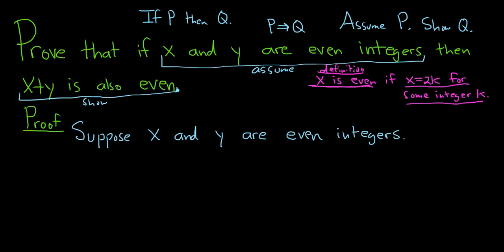So now we have to show x plus y is even. Most of the time in mathematics, proofs are what I like to call a one-way proof. There's only one thing you can do now, and that's to write down what it means for x and y to be even. So then you write, what does it mean for x to be even? This means x equals 2k for some integer k.